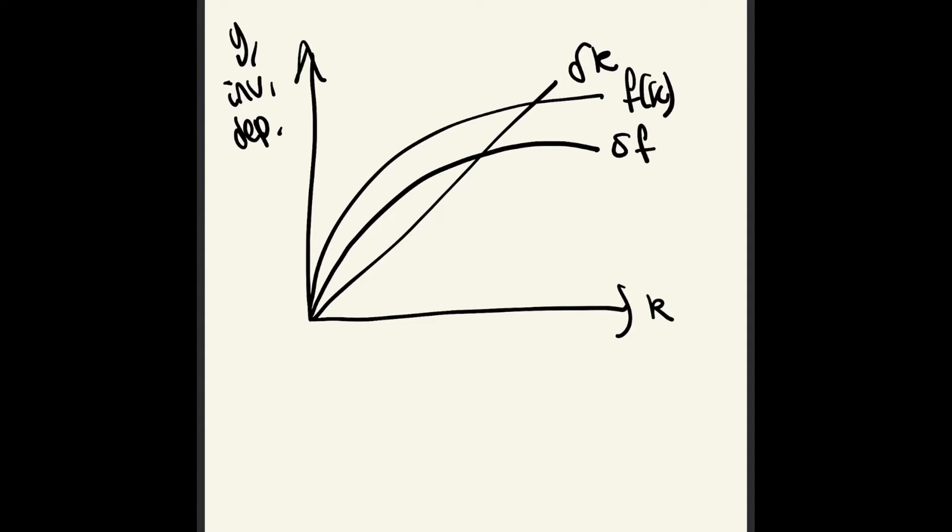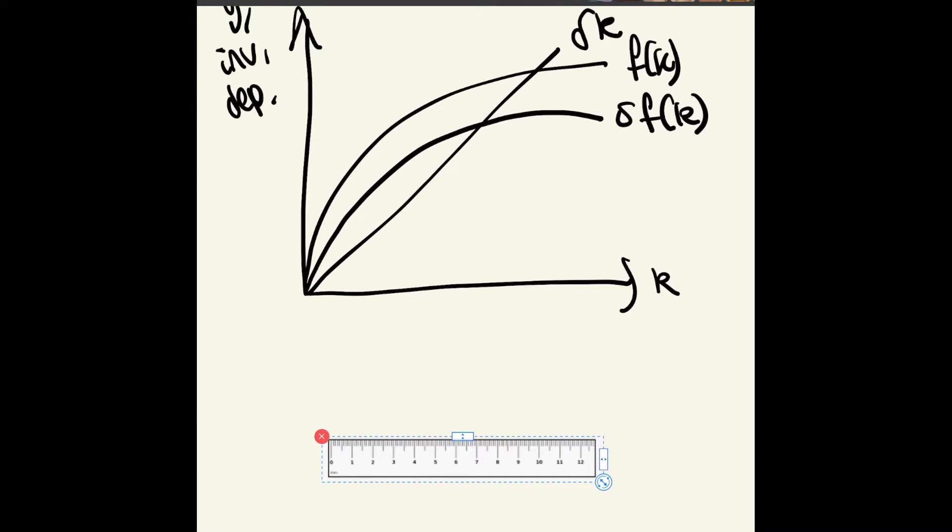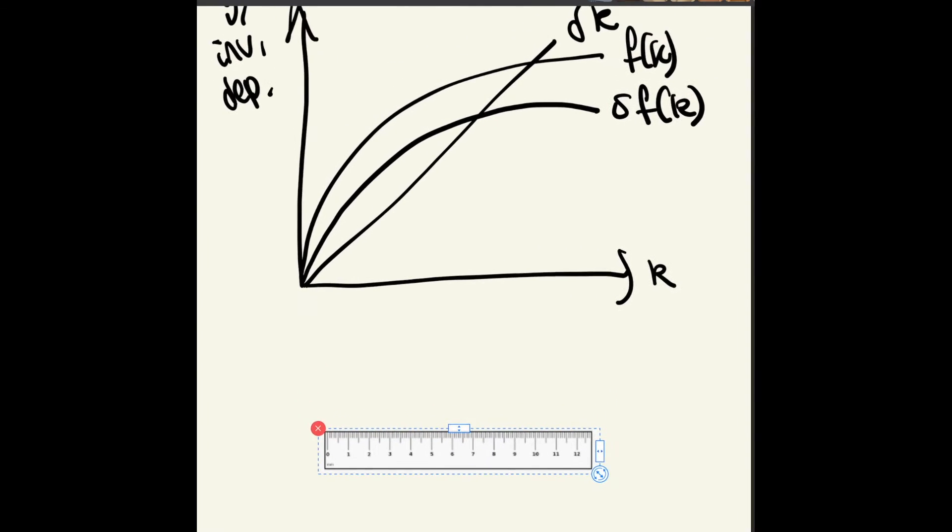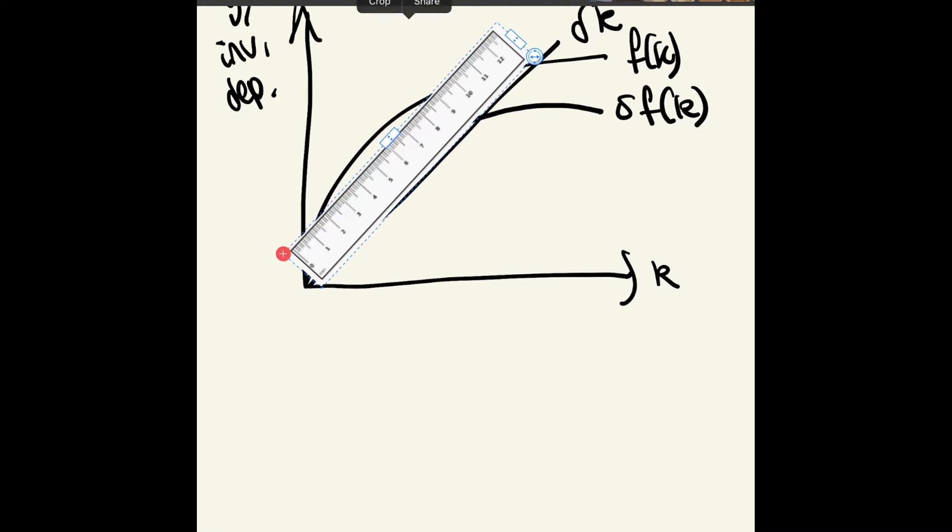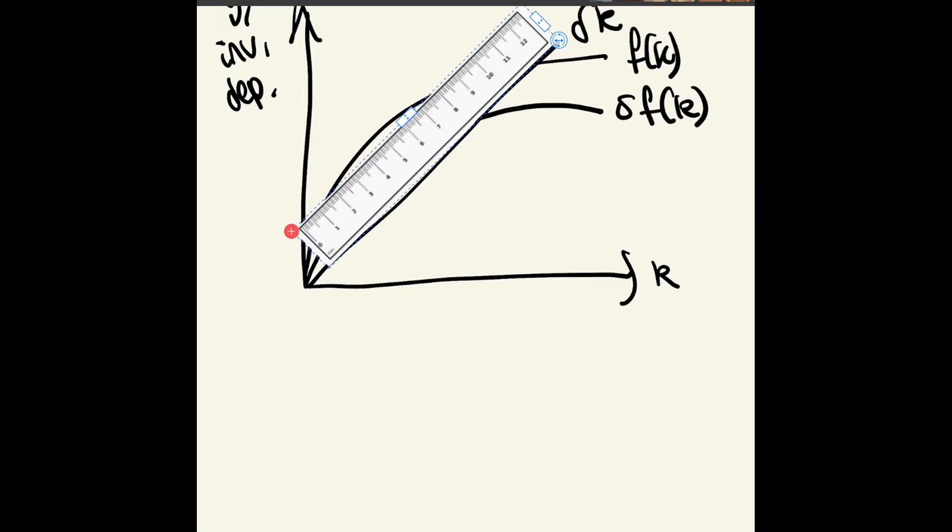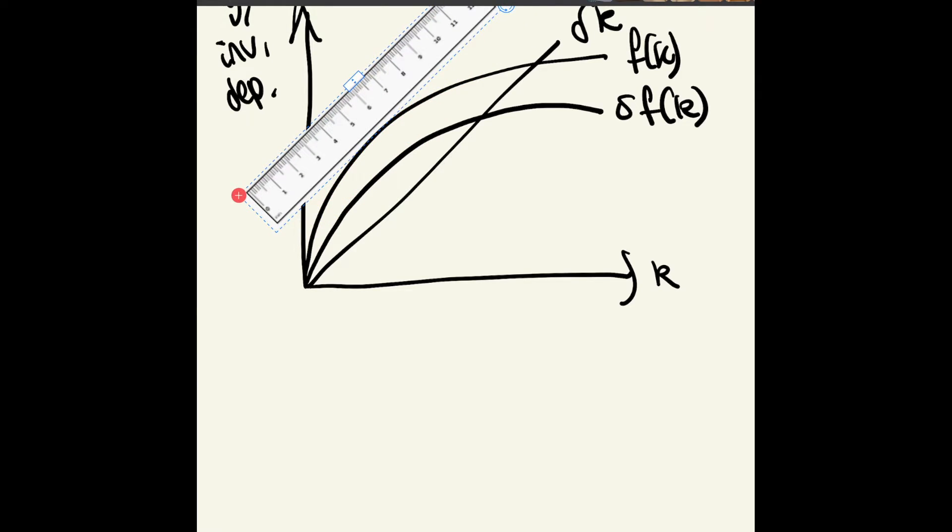We want to maximize consumption, which is the f of k curve minus delta k. That means we want to maximize the gap between those two lines. Get a ruler and line it up to your delta k line, then drag it back until it's tangential to the f of k curve. The point where the two gradients are the same is when we've got maximum distance between them. Draw a dot down—that's when steady-state consumption per capita is at a maximum, so that is k gold.